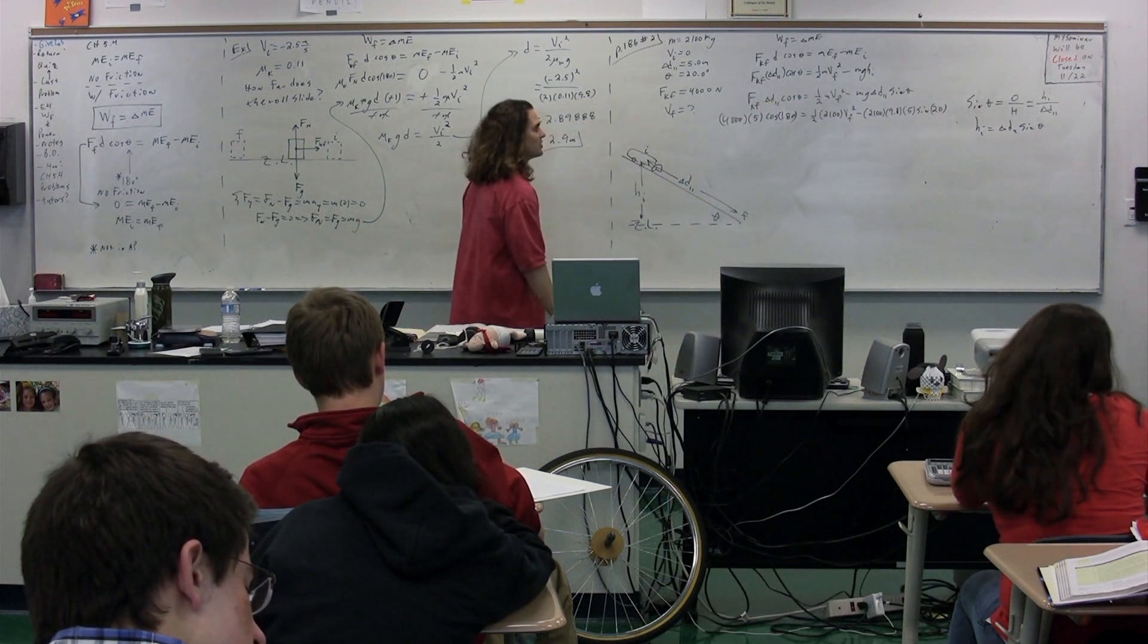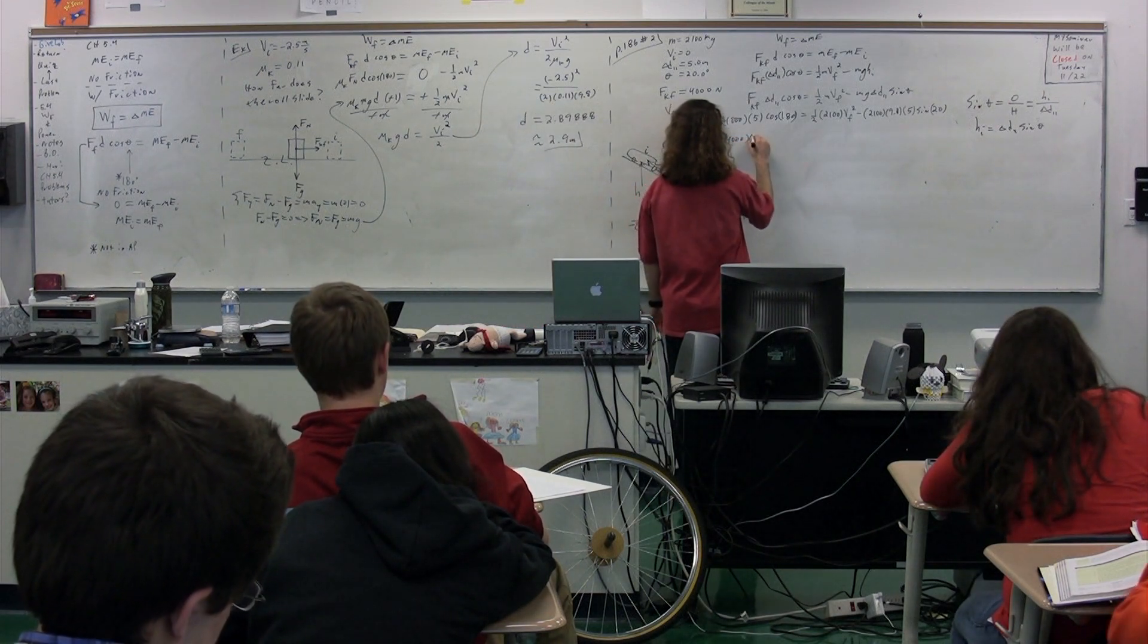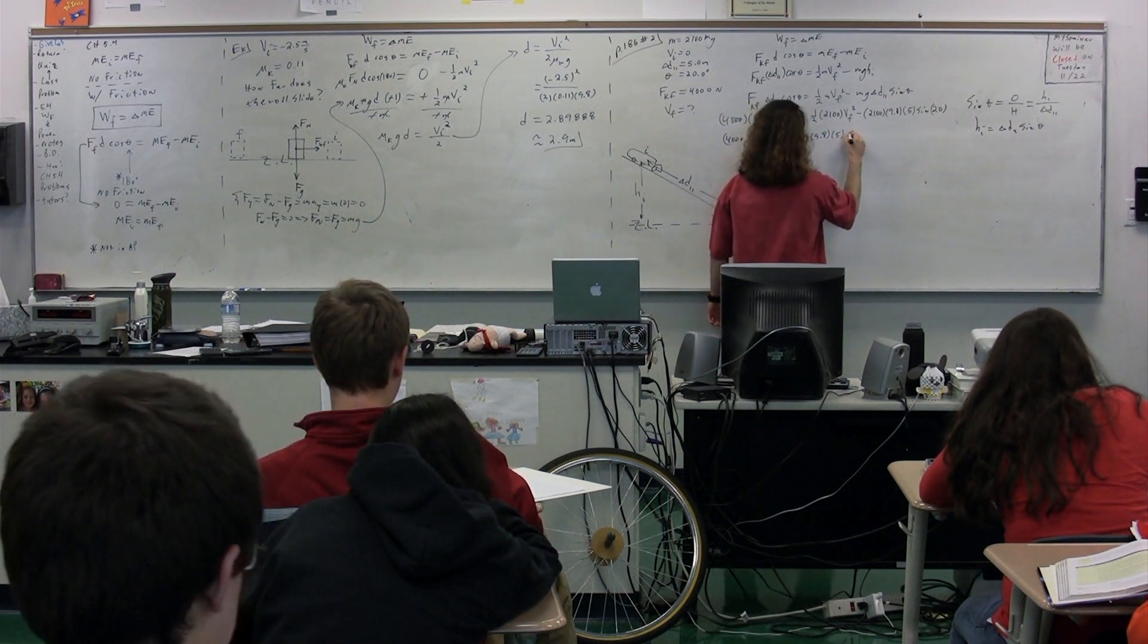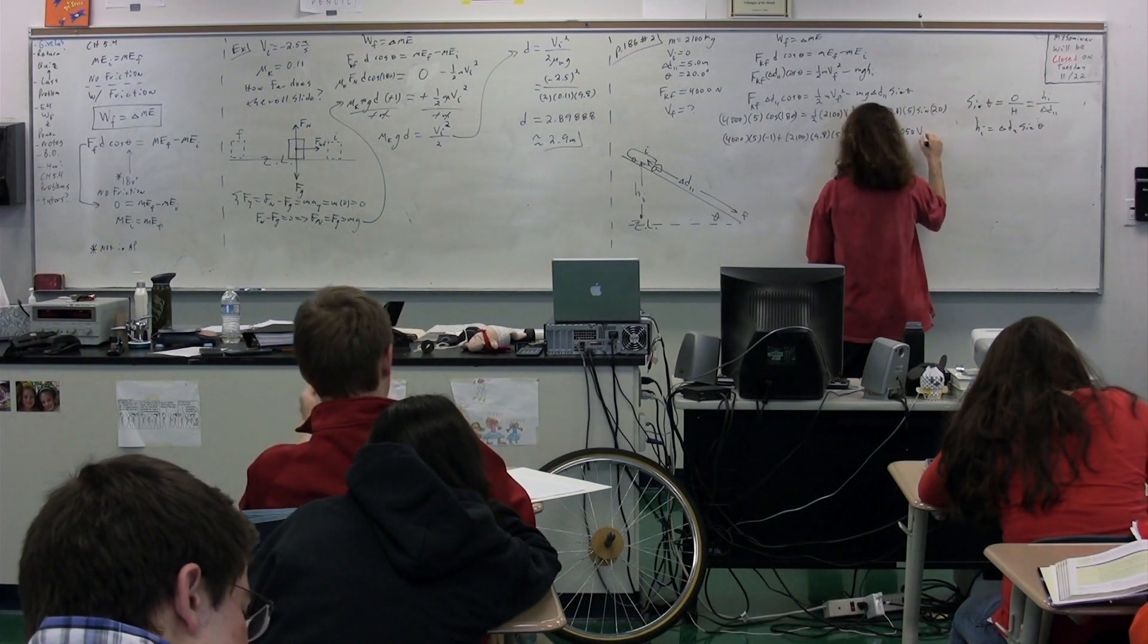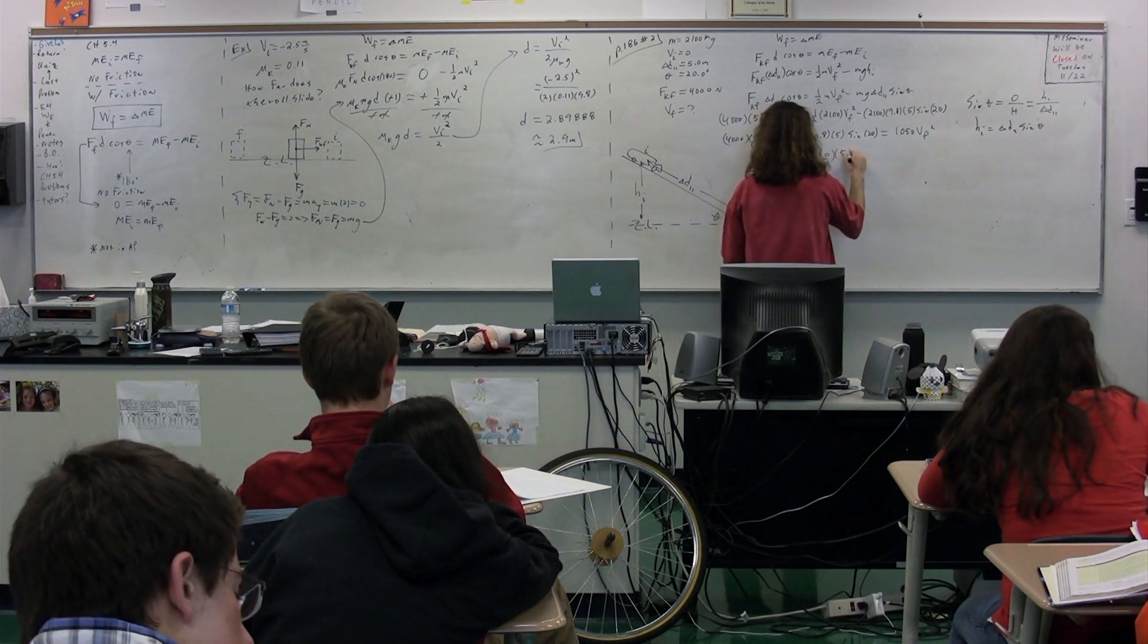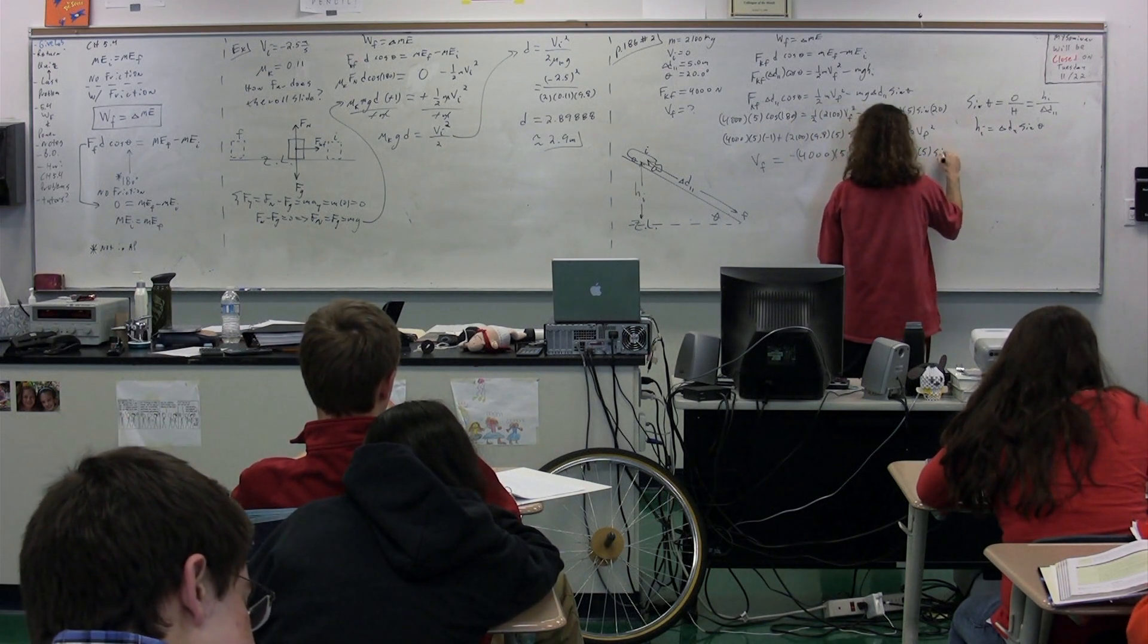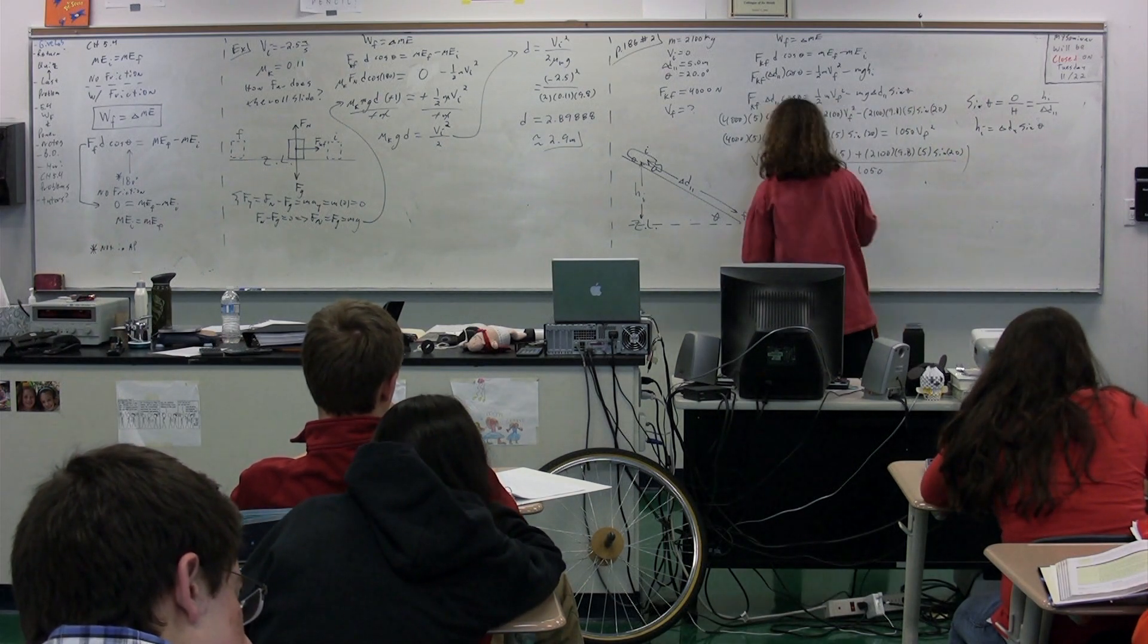So we now have all the numbers. We just need to rearrange it to solve for velocity final. So we get 4000 times 5 times negative 1, which is the cosine of 180. We'll add the 2100, et cetera, to both sides. And we have, then, 1050 times the velocity final squared. Velocity final equals this giant mess, 4000 times 5, the negative of, plus our 2100 times 9.8 times the 5 times the sine of 20, divided by the 1050, that whole thing with the square root.